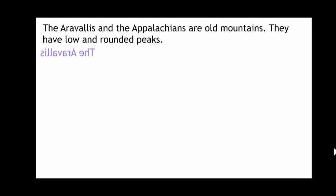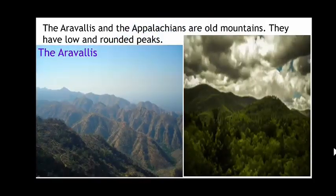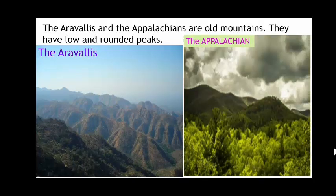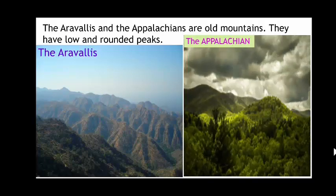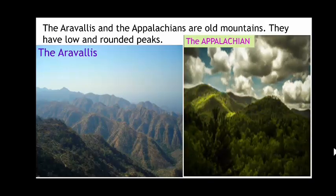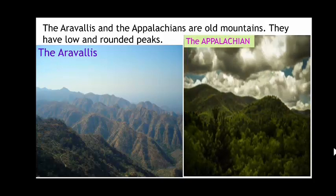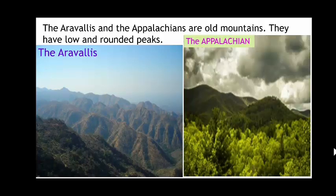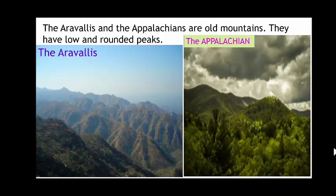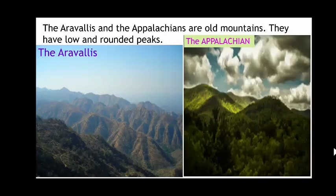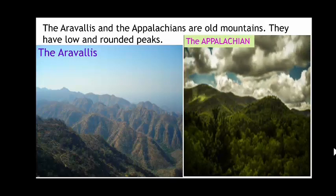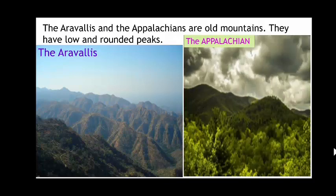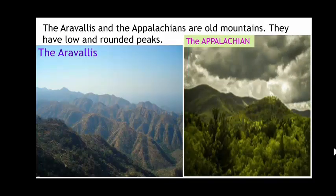Then we have another type — old mountains. Old mountains have low and rounded peaks. Why do they have low and rounded peaks? Because with the change in time, due to erosion and weathering, there is a change in the mountain, and it becomes low and forms a round shape. The examples of old mountains are the Aravalis and the Appalachians, as they have round shape and rounded peaks and are very low.